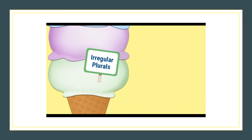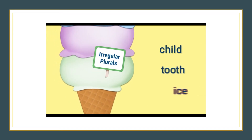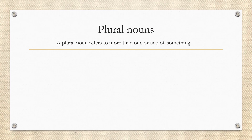Our last rule is irregular. That's because some words don't follow the normal patterns for making plurals. Child becomes children, tooth becomes teeth, and ice just stays ice. Hopefully that video was a good reminder of the different rules to remember when changing a singular noun to a plural noun.